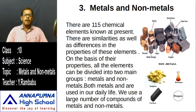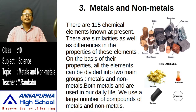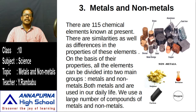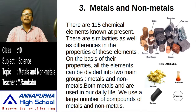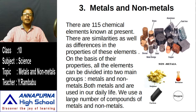A large number of compounds formed from metals or non-metals are also used in daily life. Examples of metals include aluminum, iron, and copper; alloys include brass, bronze, and steel. Non-metals include sulfur, bromine, oxygen, and carbon. We categorize these mostly on the basis of their physical properties.